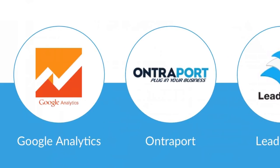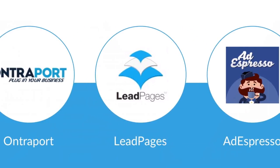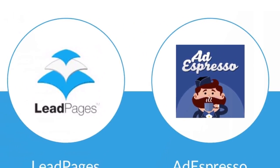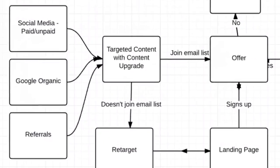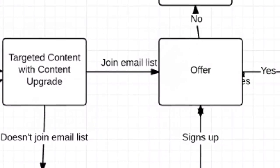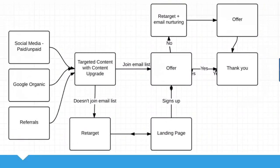Here are some tools for monetization. I highly recommend Google Analytics. Ontraport is a good marketing automation tool. Leadpages is a good landing page tool for creating your opt-in pages. And AdEspresso is a great tool for building out your Facebook ads. This could be another funnel where you're driving people from Google, social media referrals into targeted content. You offer people to join the email list — if they join, you might throw them up an offer. If they don't join, you might retarget people with ads at a later stage and bring them back into a landing page.